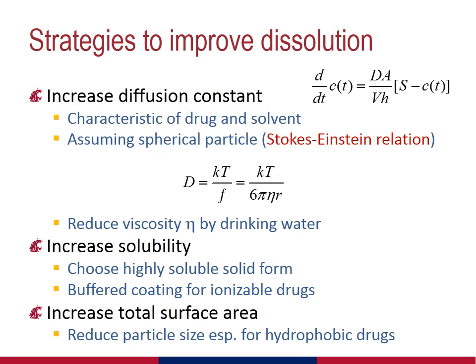Now that we understand how the Noyes-Whitney equation models the dissolution kinetics of solid dosage forms, we can use it to answer the more important question of how we can improve the dissolution characteristics of solid dosage forms. For the moment, we will assume that our goal is to increase dissolution rate — in other words, to maximize the rate of appearance of drug molecules in the bulk fluid. Given the constants on the right side, it would appear that if you want to maximize the rate, you would want to increase the terms in the numerator and minimize the factors in the denominator. In practice, not all of these factors are susceptible to modification.